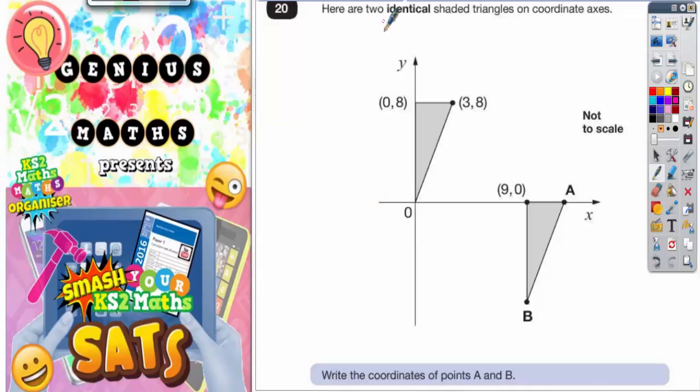Question 20. Here are two identical shaded triangles on coordinate axes. Remember identical means the same.